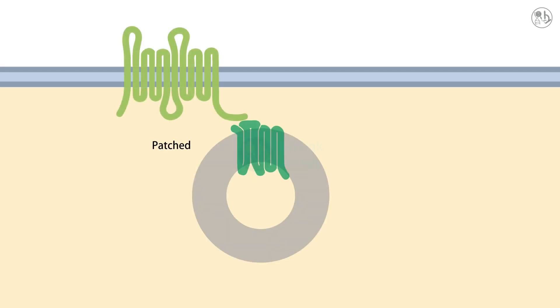Meanwhile, patched, a transmembrane receptor that binds to Hedgehog, keeps smoothened, another transmembrane protein, inactive and sequestered in intracellular vesicles.